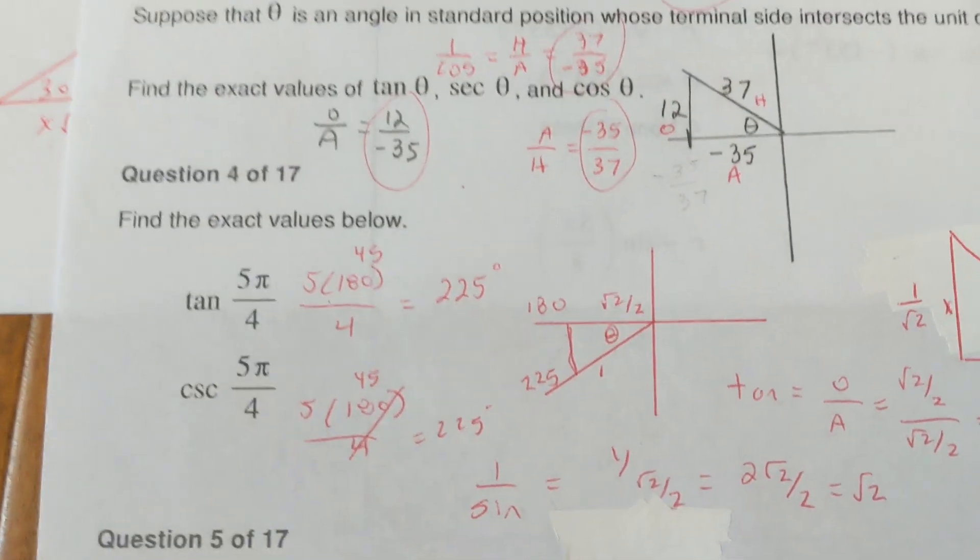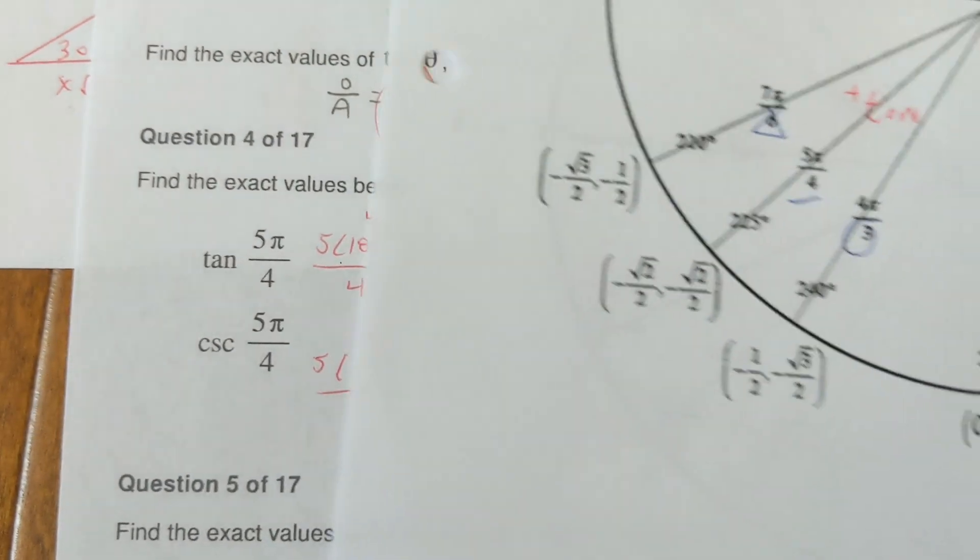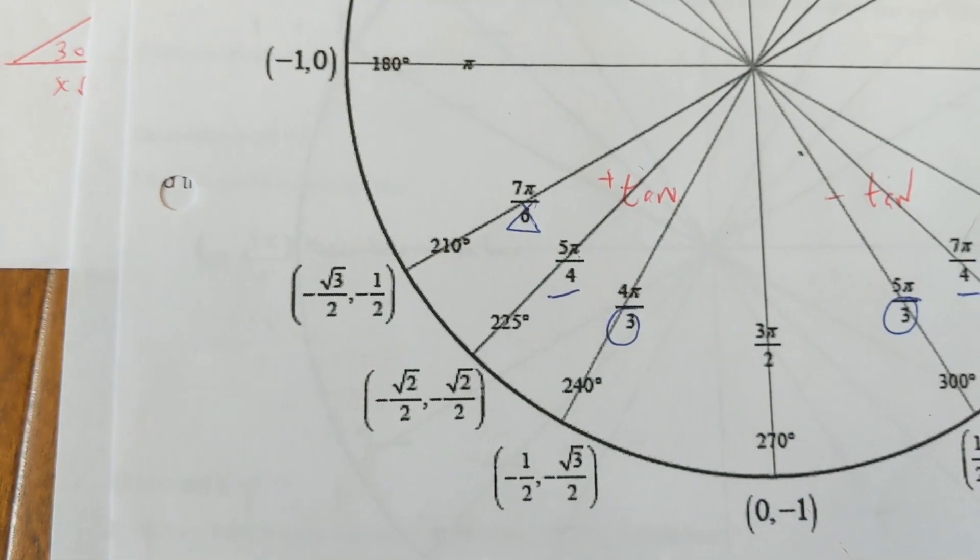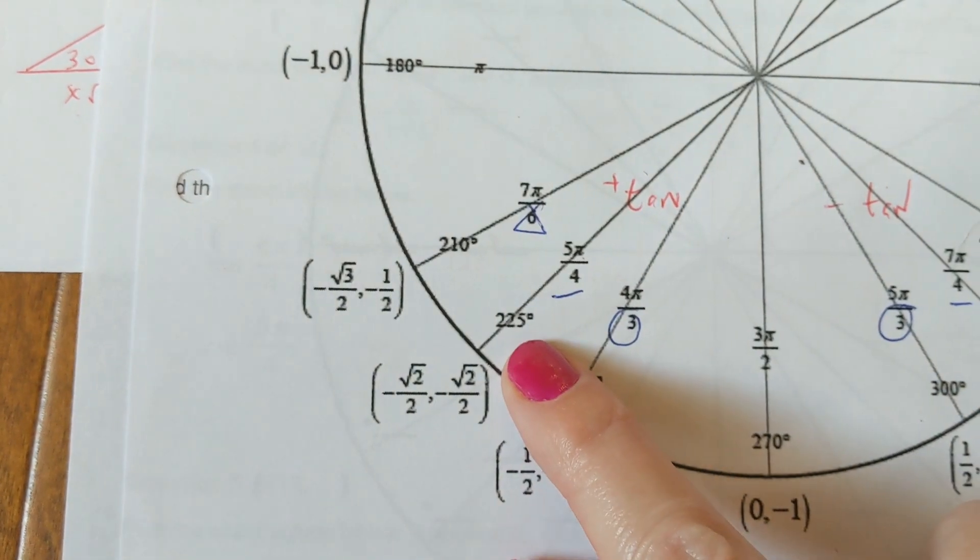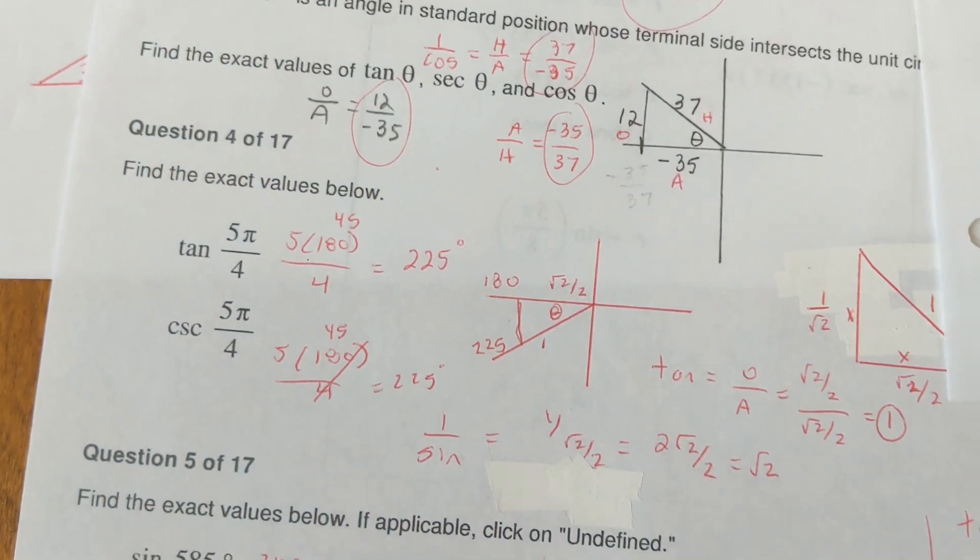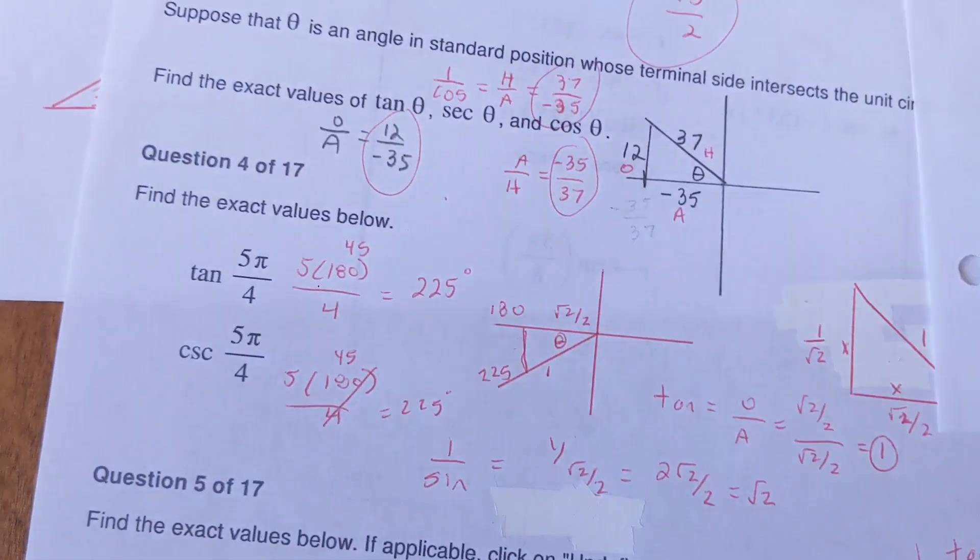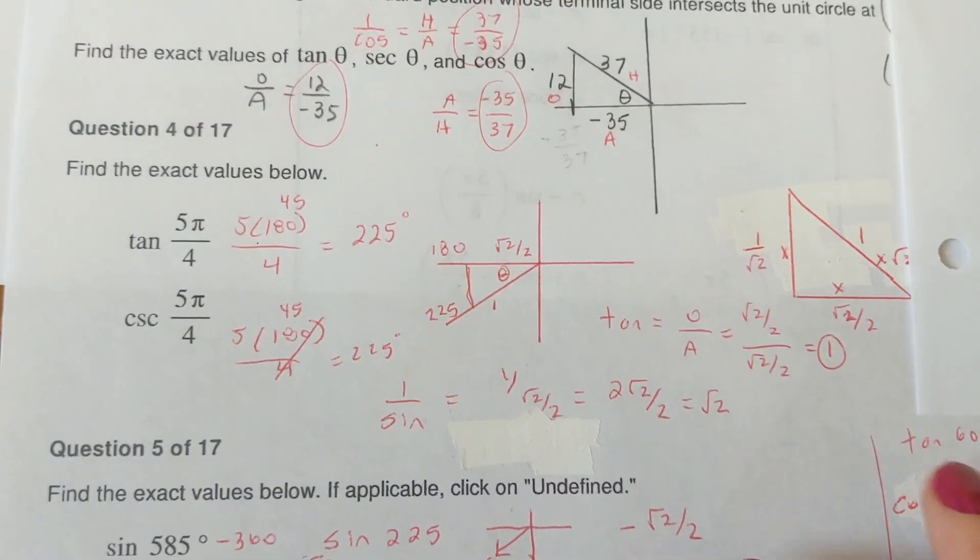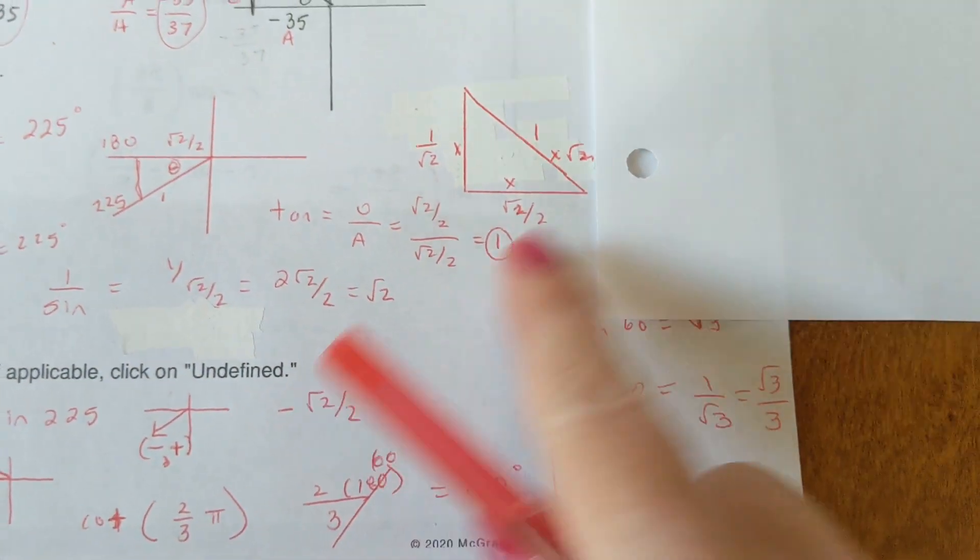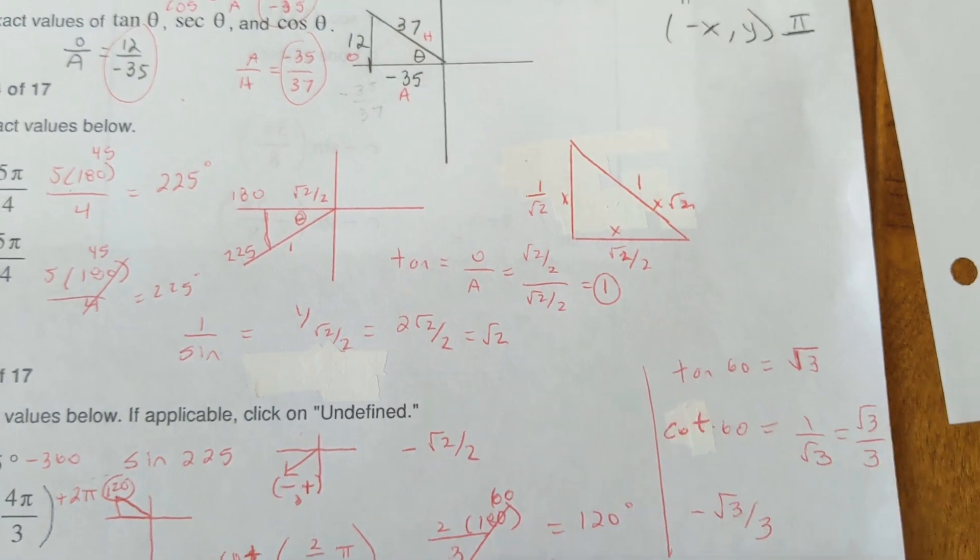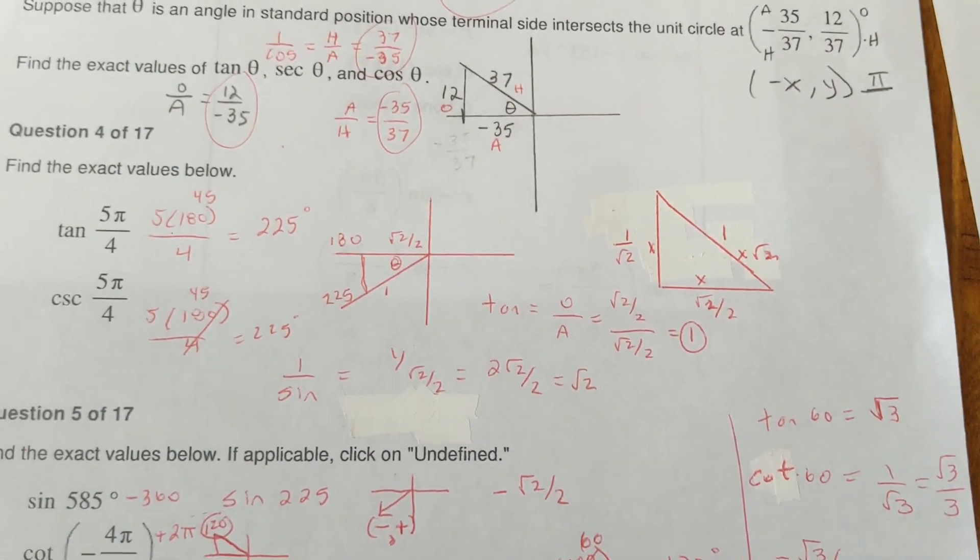The next one, they wanted the tangent of 225. If you know it and you've memorized it on the unit circle here, you would know the tangent of it at 225 down here. It's a 45-degree angle. And we talked about tangent here a second ago. And tangent is equal to 1. So the tangent of 225 is equal to positive 1.